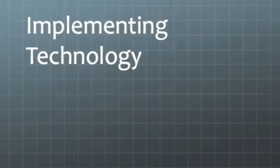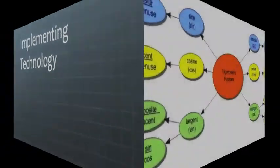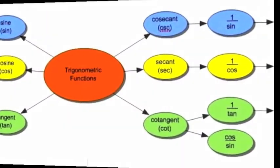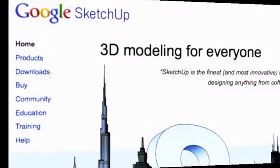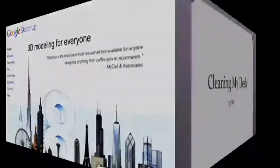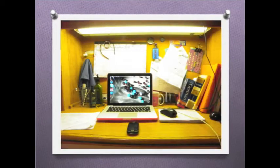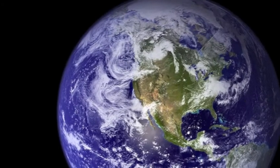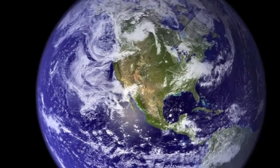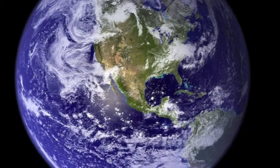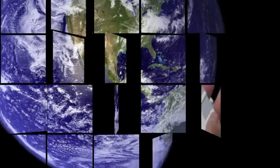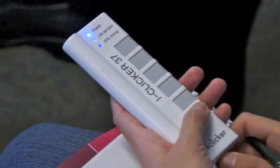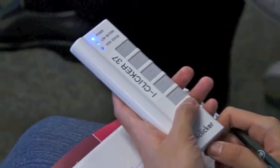Technology can be implemented in the classroom in many different ways. Programs such as Inspiration, Google Sketchup, and PowerPoint can be used as visual tools for teachers as well as creative tools for students. Online tools such as teacher-created web quests and Google Earth can be used for more individualized learning. Using devices such as iClickers can be a way to elicit participation in a fun manner — it's like a game.